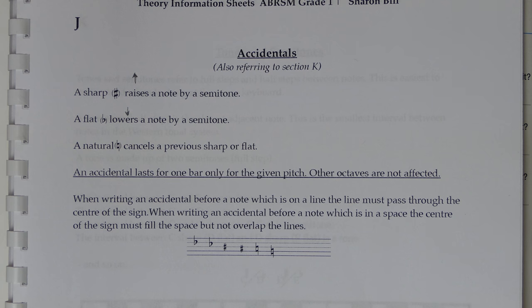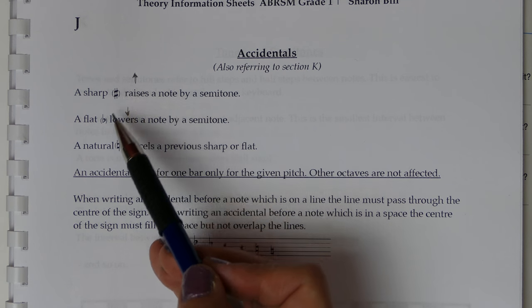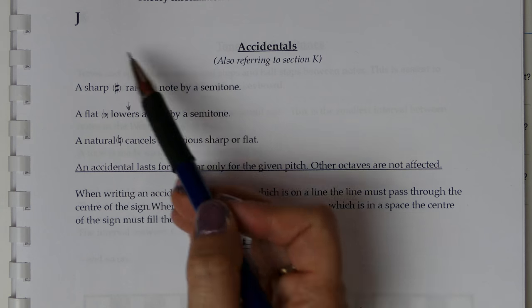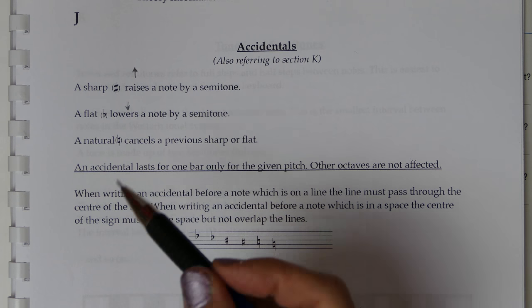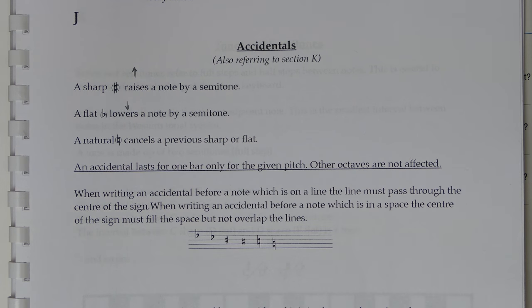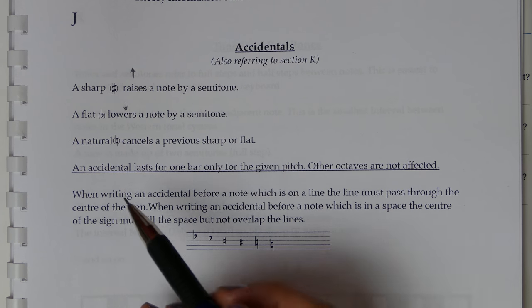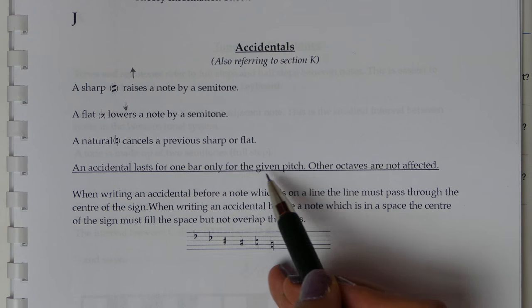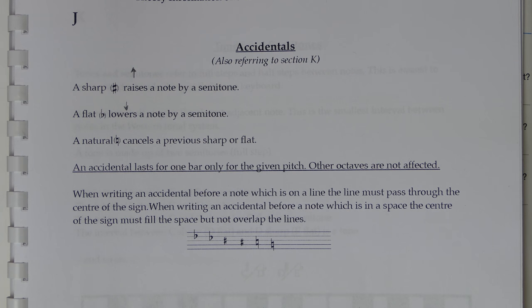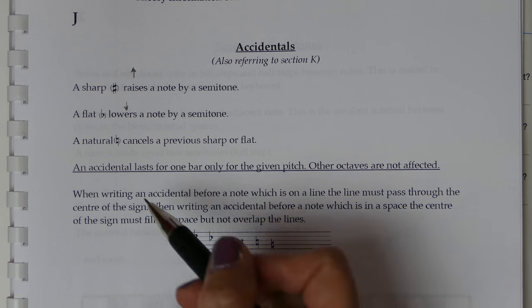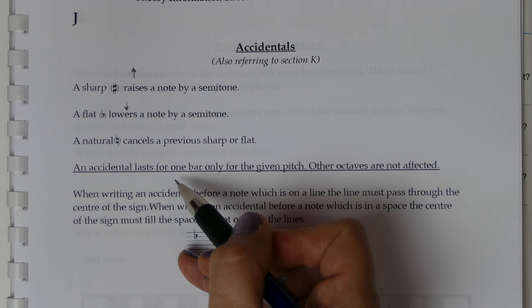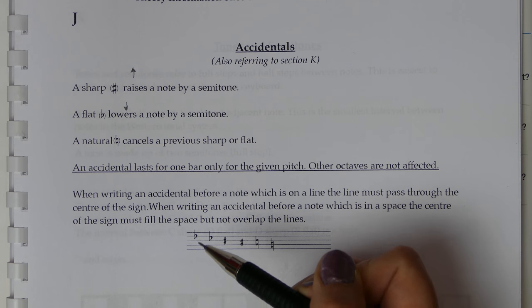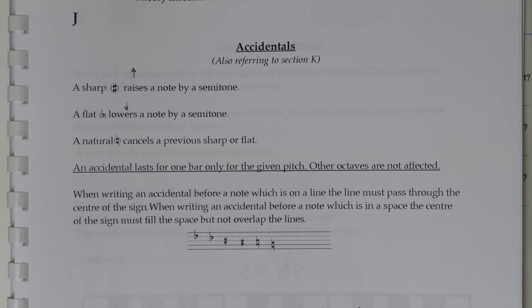A flat sign lowers a note by a semitone and a natural sign cancels either of those that have previously occurred. Now a sharp or a flat or a natural we would refer to generically as an accidental. That's when it's written next to the note that we need it as and when we need it. It lasts for one bar only and only for that given pitch, other octaves aren't affected so it only affects that one particular note on that particular pitch so none of the other octaves are changed and then the bar line will cancel that.